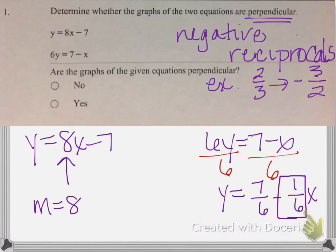So here's my slope on this one. So it's negative 1/6, and this slope is 8. So are these, they're not parallel, because they're not the same, and they're not perpendicular, because they're not negative reciprocals of one another. So our answer would be no.